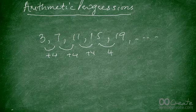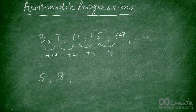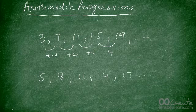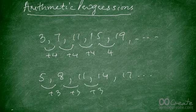Another example: the series 5, 8, 11, 14, 17 is also an arithmetic progression because you keep adding the same difference, and that difference here is 3. So an arithmetic progression is a number series in which the difference between the terms is a fixed constant.